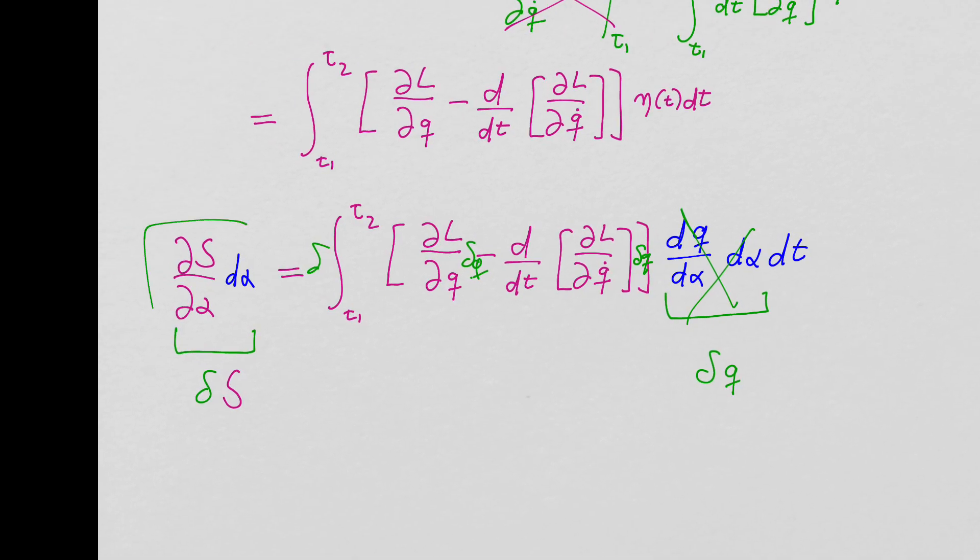So the thing to remember is if you go through that formalism, you end up with this object here and this object here. And that's where this little delta comes into.